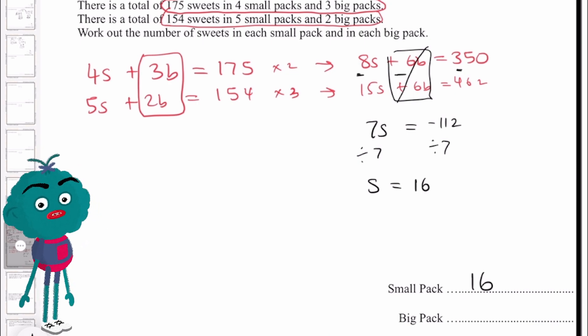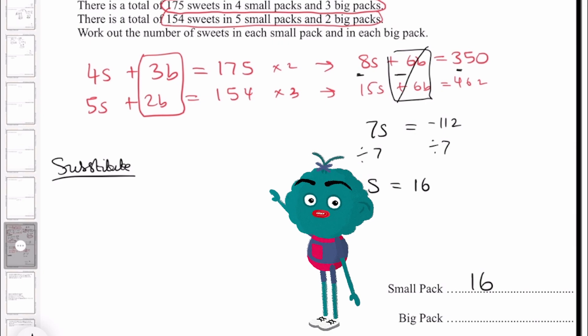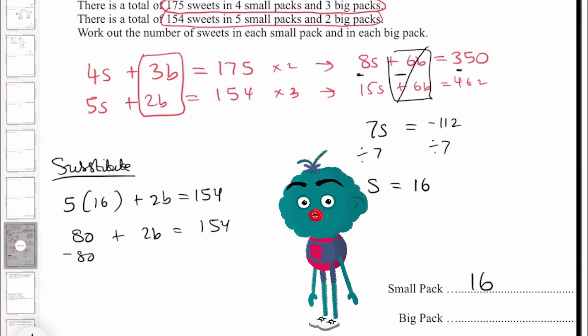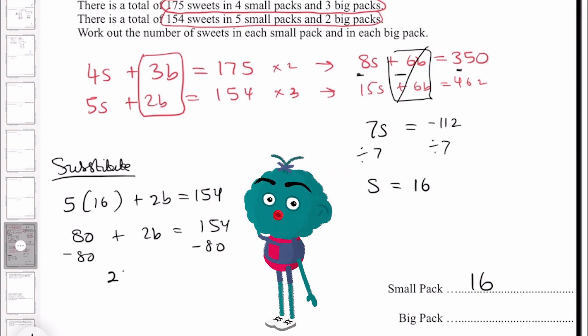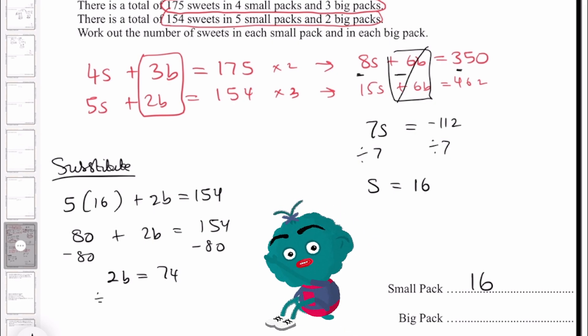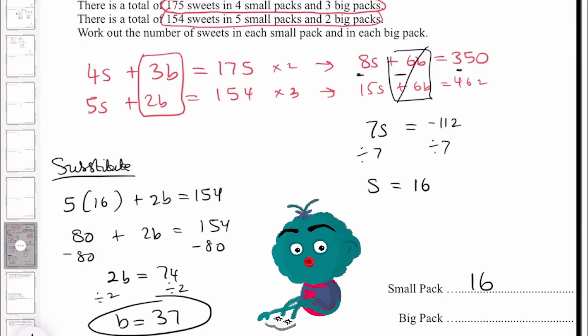Let's go ahead and substitute this. I'm going to take our second equation. I'm going to do 5 multiplied by our small packet, which is 16, plus 2b, which equals 154. I'll then multiply this out before subtracting 80 from both sides using my inverse operation, which then leaves me with 2b, which equals 74. And then divide both sides by 2. So I have b, which equals 37.